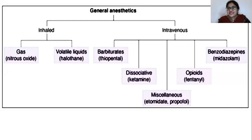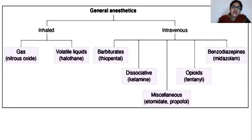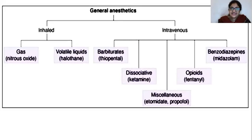For intravenous, the major classes are barbiturates, dissociative medicines, and others, plus opioids and benzodiazepines. By looking at this classification, you should understand what our target is. Are we exciting the brain or are we depressing it?